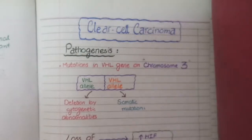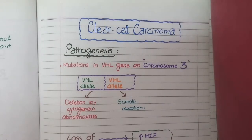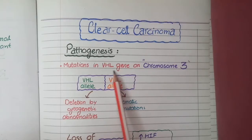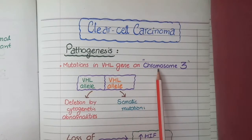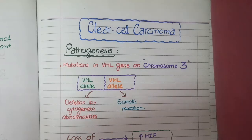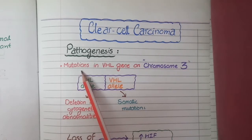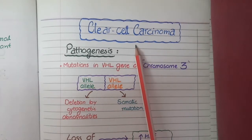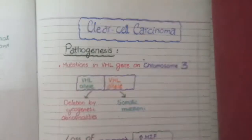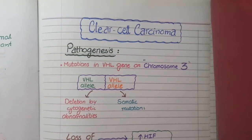Let's start with clear cell carcinoma and its pathogenesis. Clear cell carcinoma occurs when there are mutations in the VHL gene on chromosome number 3. VHL stands for Von Hippel-Lindau, and this VHL gene is a tumor suppressor gene whose function is to suppress the formation of cancers. When this tumor suppressor gene is itself mutated, there is a tendency to develop clear cell carcinomas.